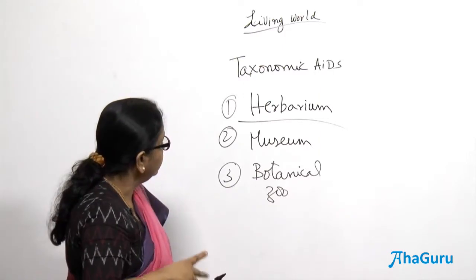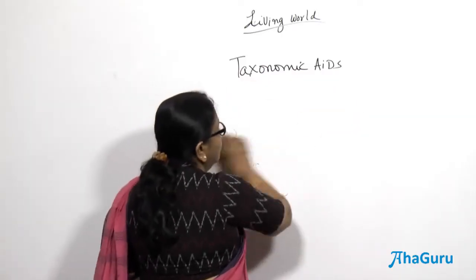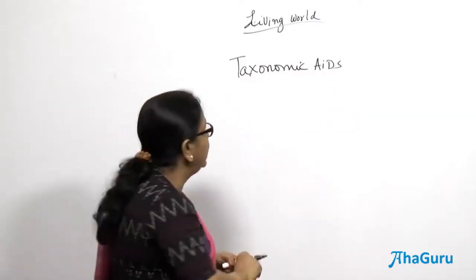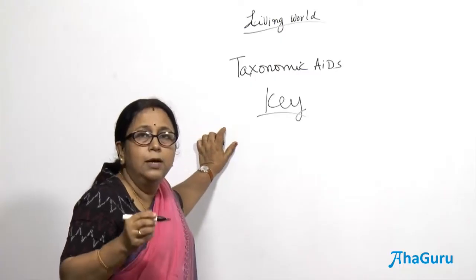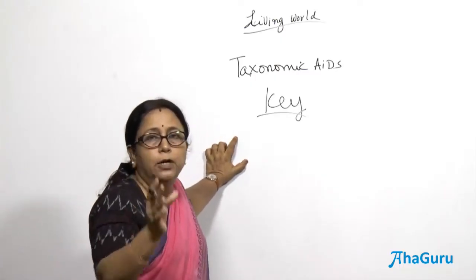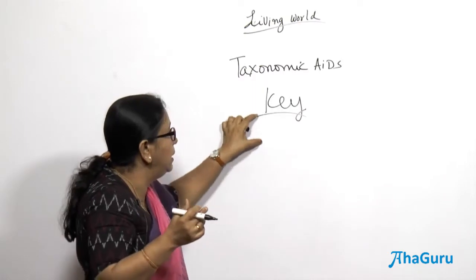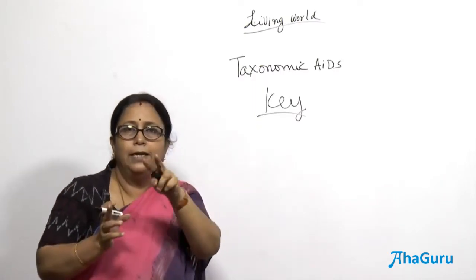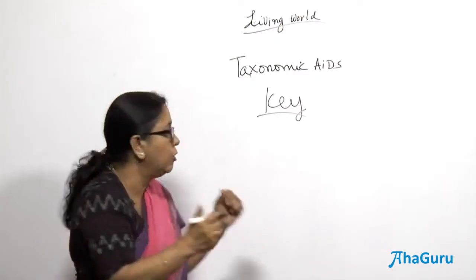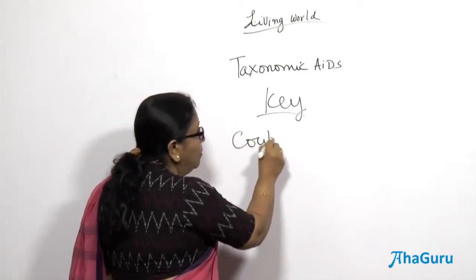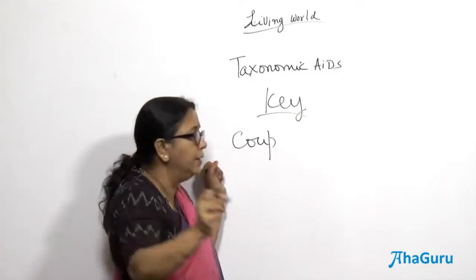Apart from those, there is one more thing you must know, which is known as the taxonomic key. A key is provided by scientists for us to classify an organism into a particular group. There is something called a dichotomous key — it will have a couple of sentences called couplets, and you need to see which one matches your organism. You have an organism to classify and they will ask a couple of contrasting questions, called couplets, which help in classifying.